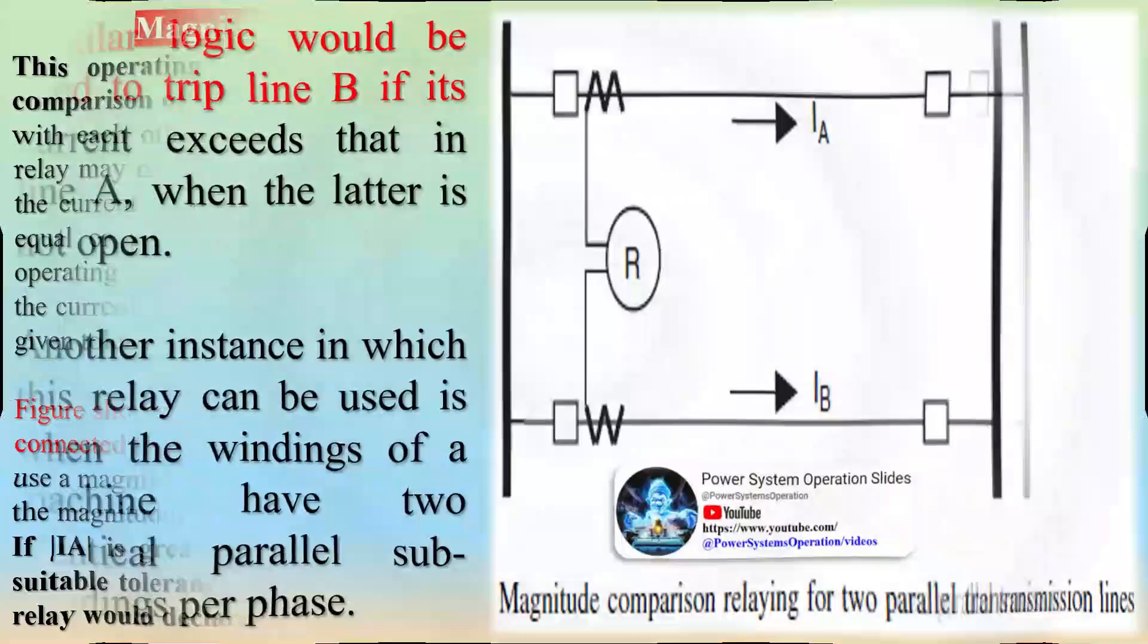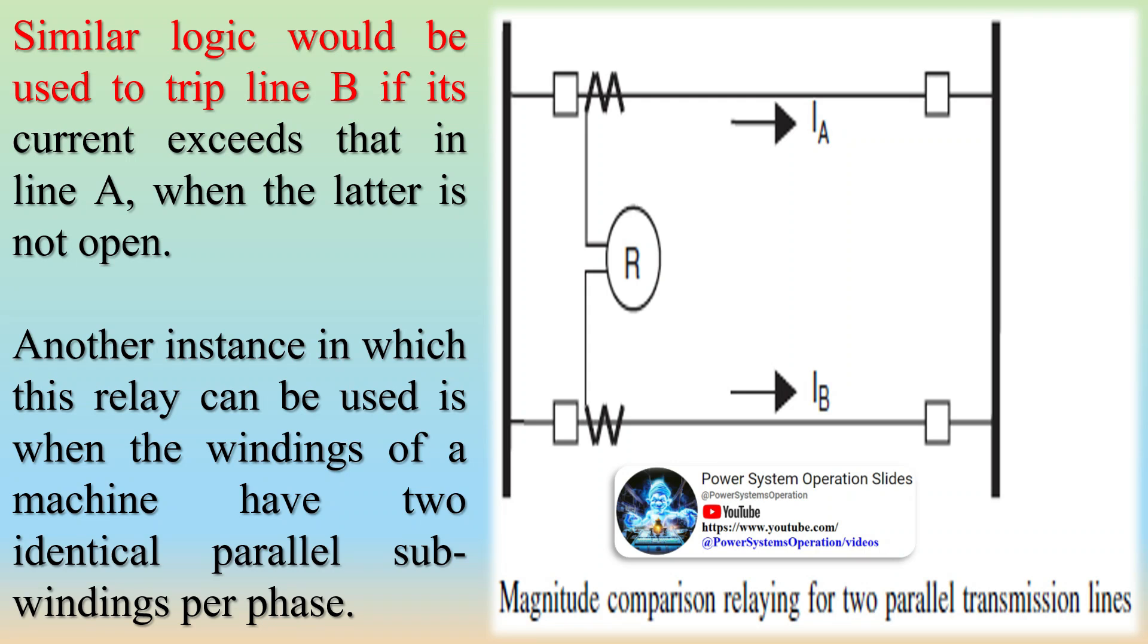The level above which the relay operates is known as the pickup setting of the relay. For all currents above the pickup, the relay operates, and for currents smaller than the pickup value, the relay takes no action. It is of course possible to arrange the relay to operate for values smaller than the pickup value, and take no action for values above the pickup. An undervoltage relay is an example of such a relay.